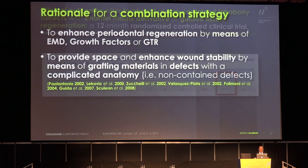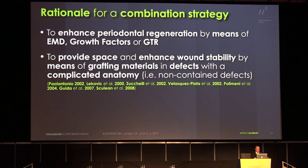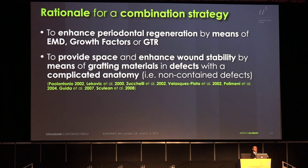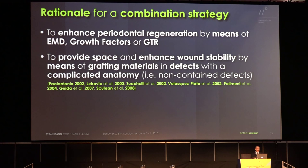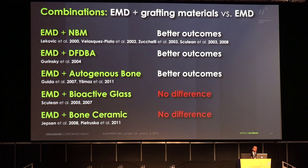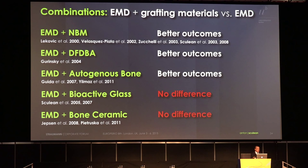Why combine different materials? Because the defect anatomy plays a very important role. The rationale is to enhance periodontal regeneration using enamel matrix proteins, growth factors, or membranes, and at the same time to provide and stabilize the space by using an appropriate grafting material. Looking at the literature, if we combine enamel matrix proteins with autogenous bone, DFDBA, or xenogenic materials, the outcomes are better. However, synthetic materials did not seem to perform as well, indicating that natural materials may function better.